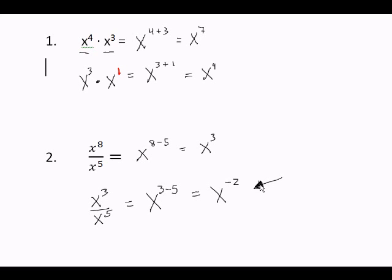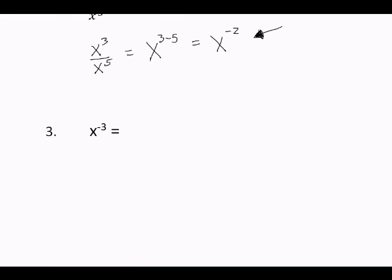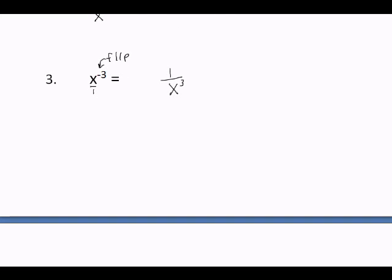Rule number 3 — the negative power rule. If you have a negative power in your final answer, you cannot leave it as negative. The negative power tells you to flip the base. If you write X as a fraction it's X over 1, so X to the negative 3 flips to 1 over X, and the power of 3 stays attached. The answer is 1 over X to the third. You cannot have a negative power in any final answer.